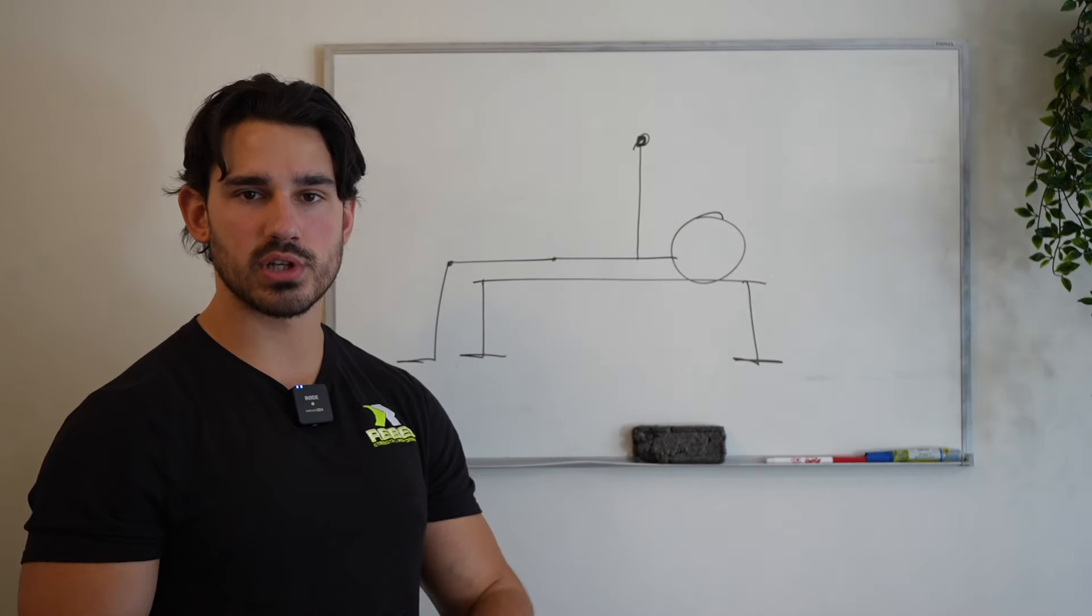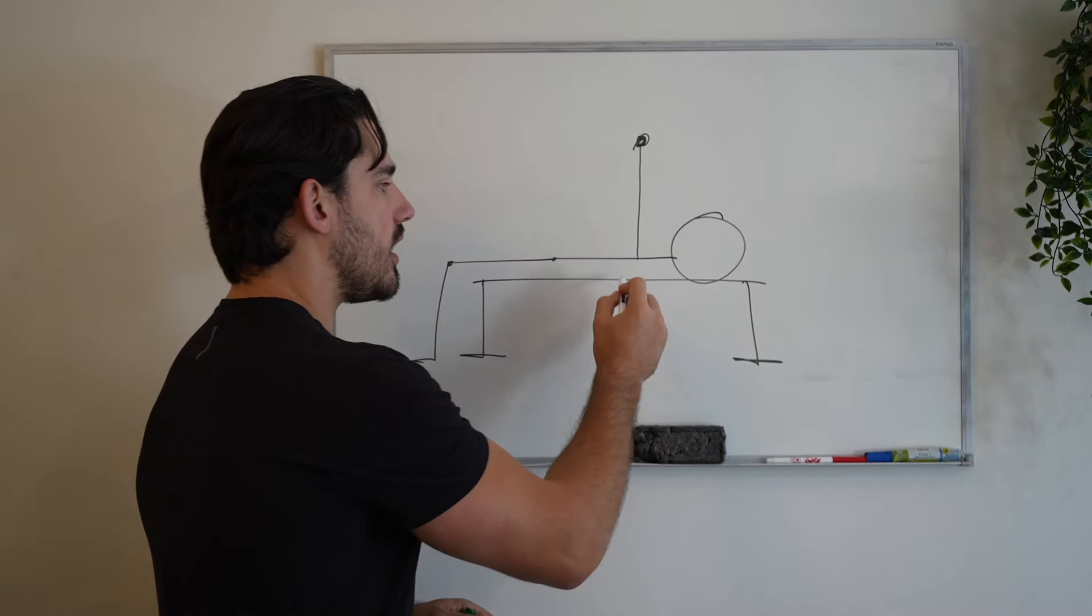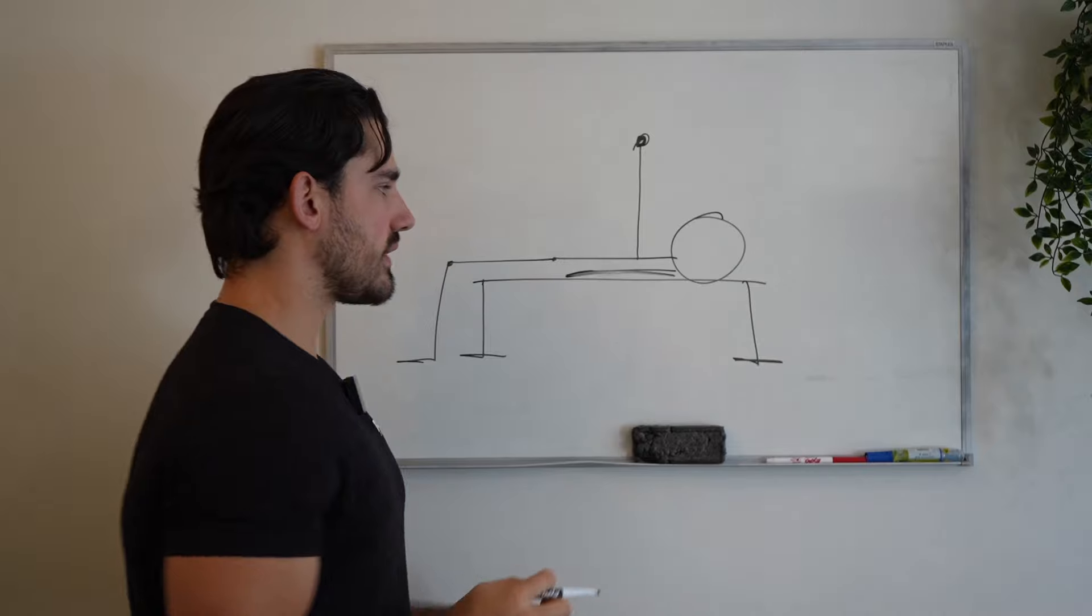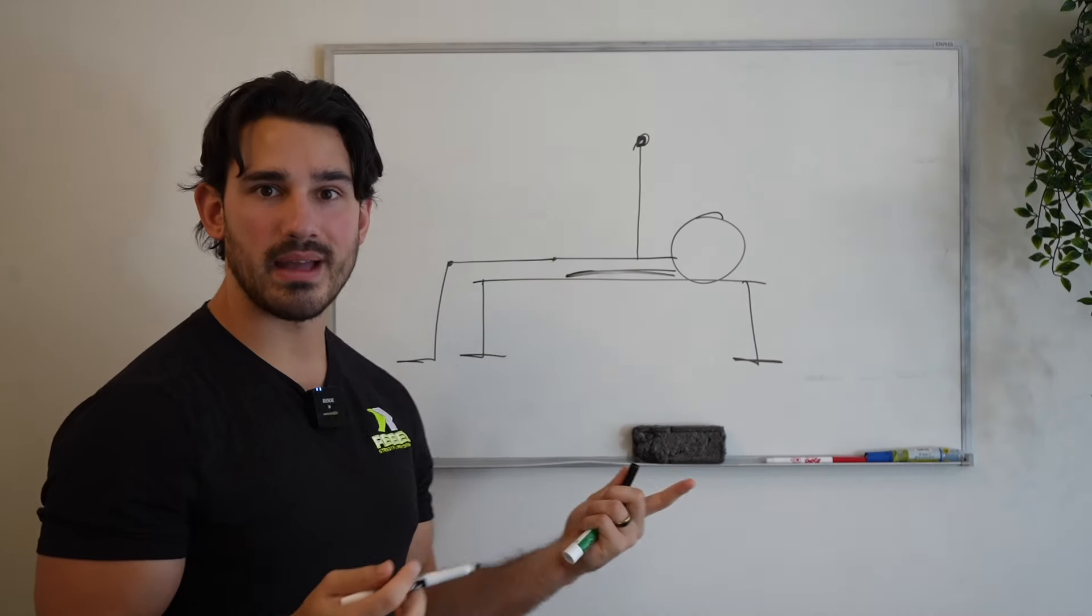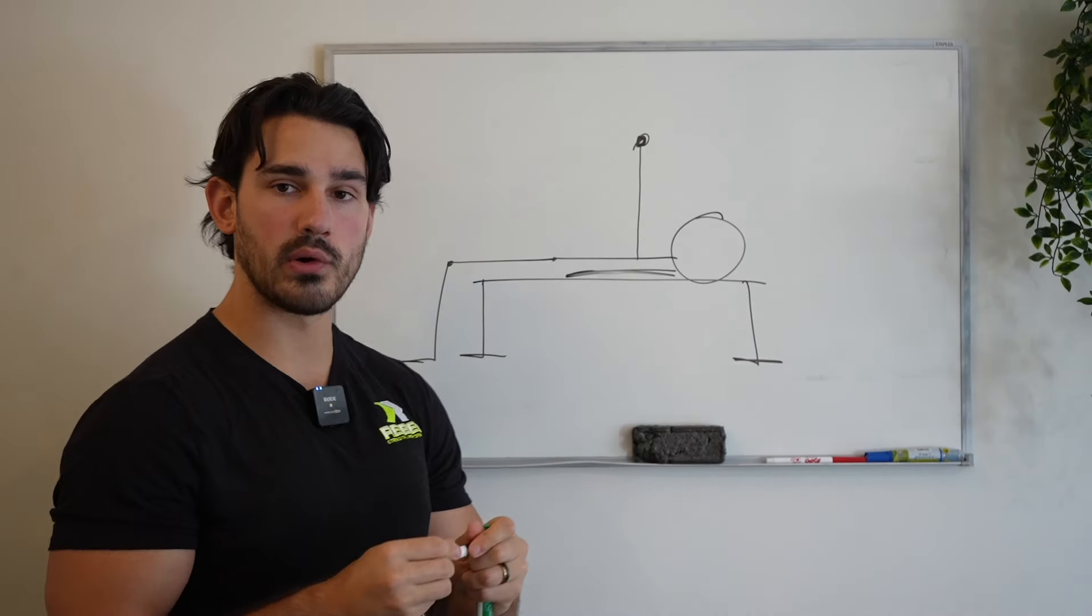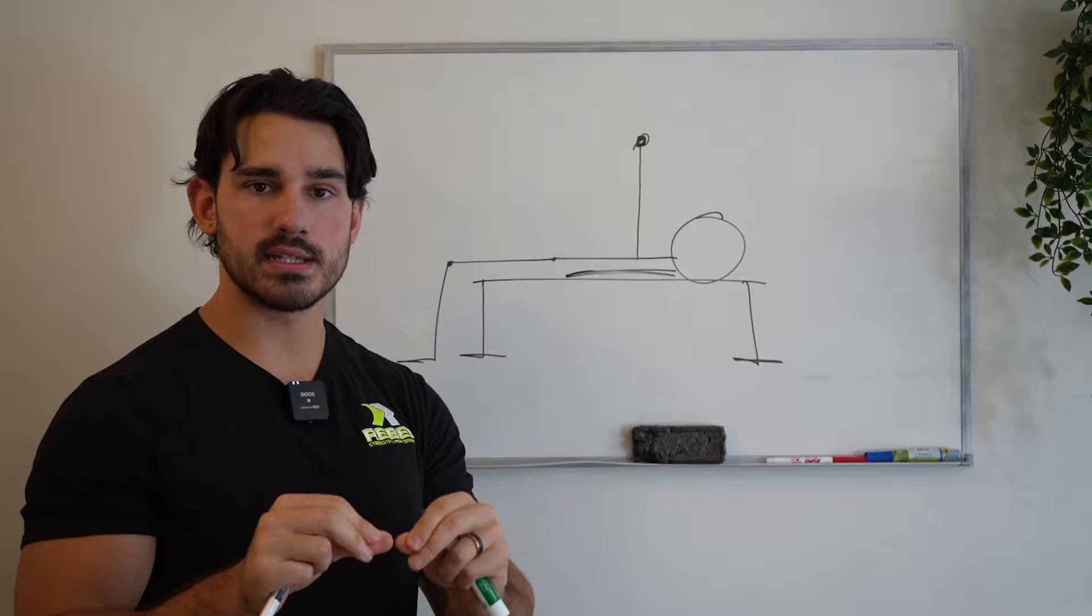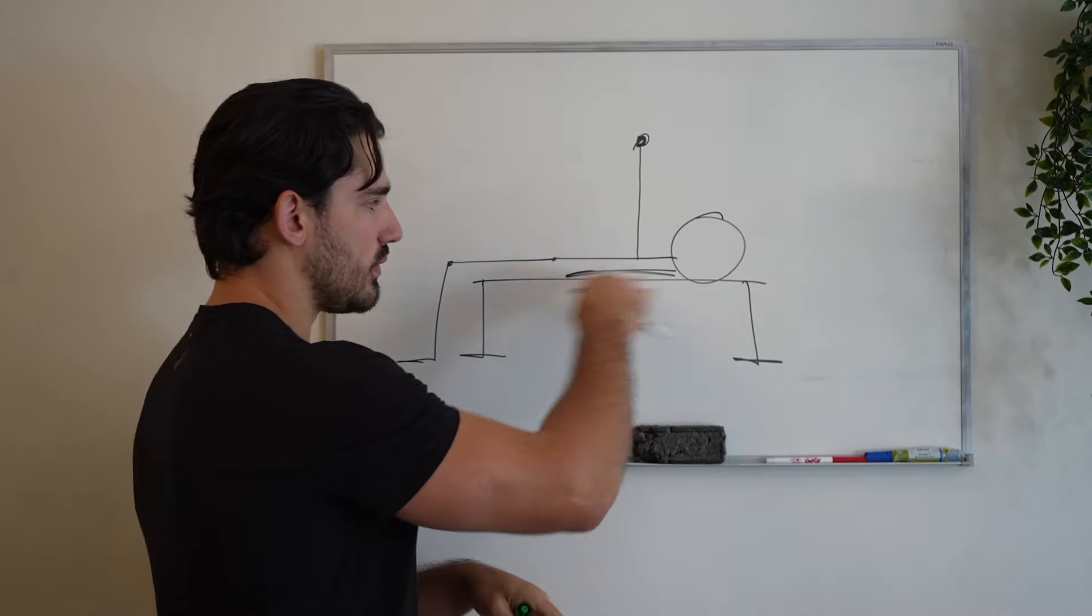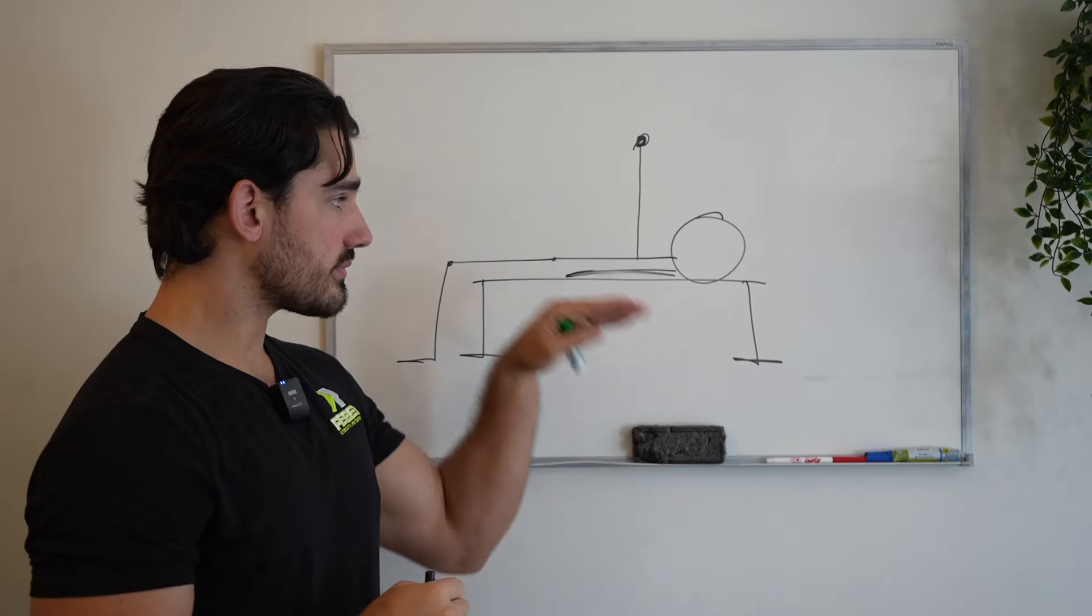So it's a really simple solution. Again, keeping this super brief. All we need is something that is directly under, hopefully somewhere like the upper back or potentially even a little bit lower, that can increase the amount of friction between what is effectively the bench at that point and the back.